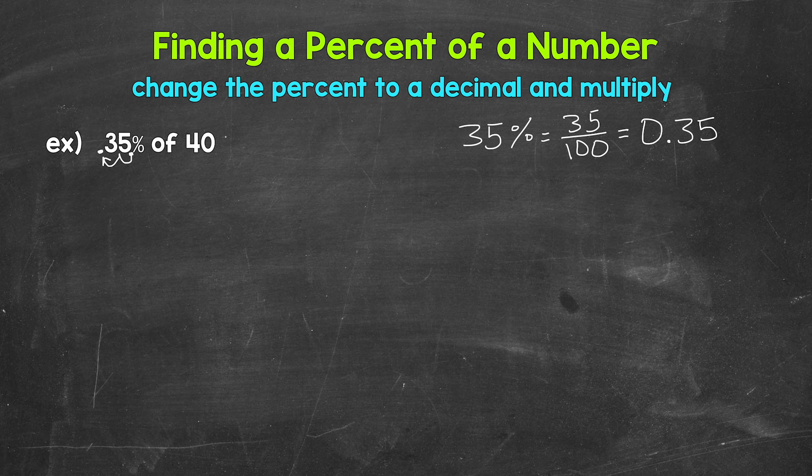Now we need to take either the fractional form of the percent or the decimal form of the percent and multiply. We're going to use the decimal form. So we need to do 0.35, 35 hundredths, times 40. Let's multiply this by hand off to the side.